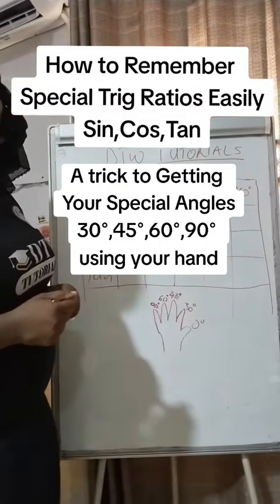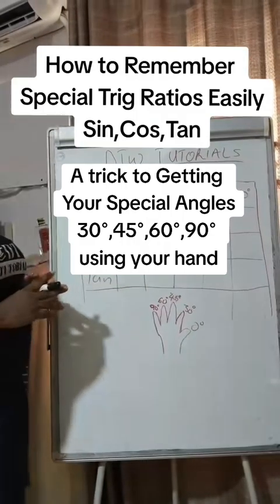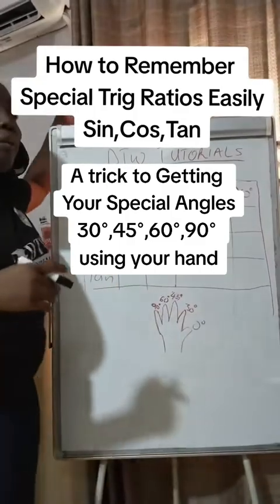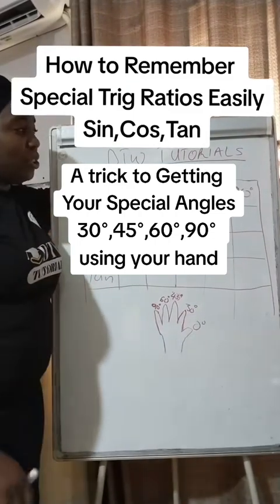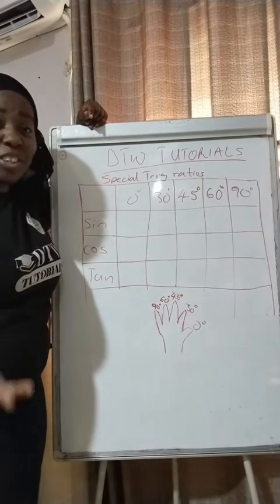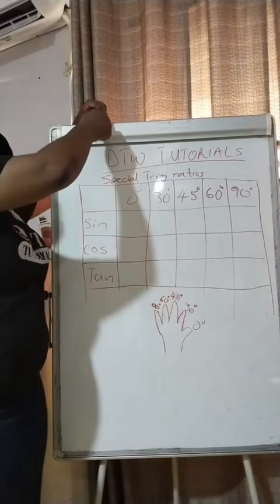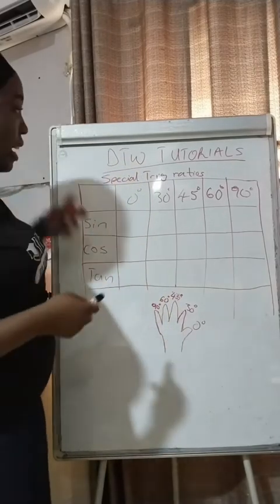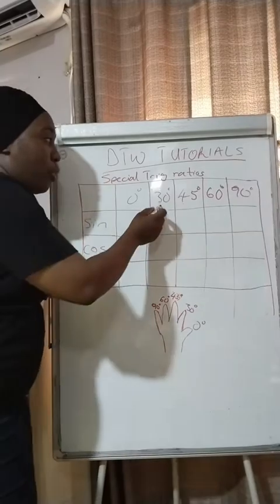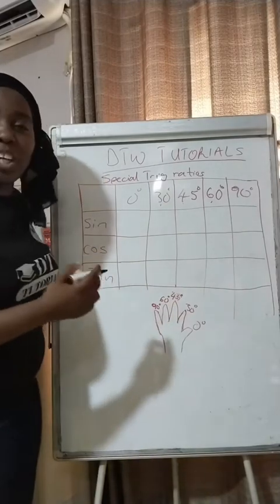Welcome to DTW Tutorials! In today's video, I'm going to be treating special trig ratios — how to know your sine, cosine, and tan for angles like 45, 60, and more. For your JAMB exam, you don't use your scientific calculator, so you'll get questions like sine 45 or cosine values in physics and other subjects. There's a special trick I'm going to teach you today — it's very friendly and easy to remember.